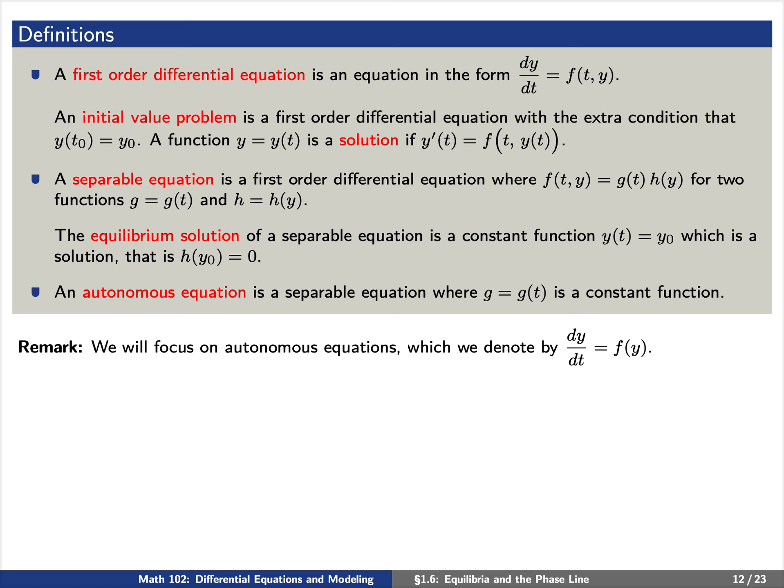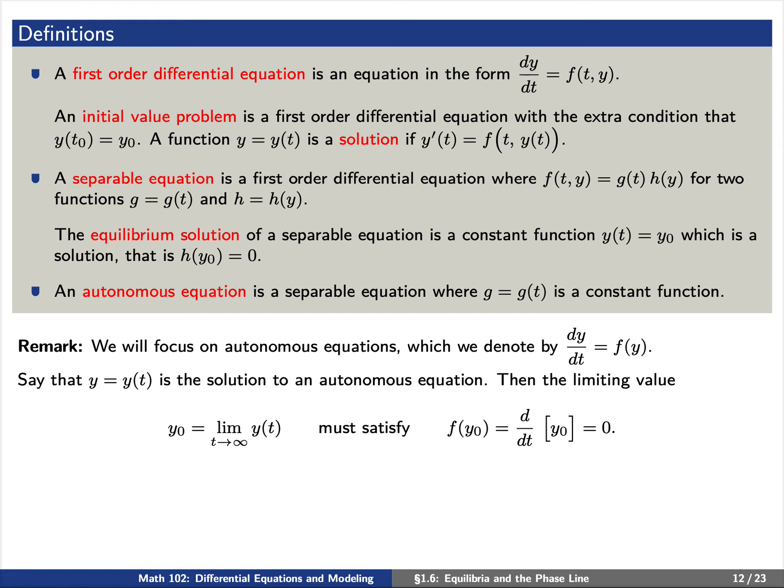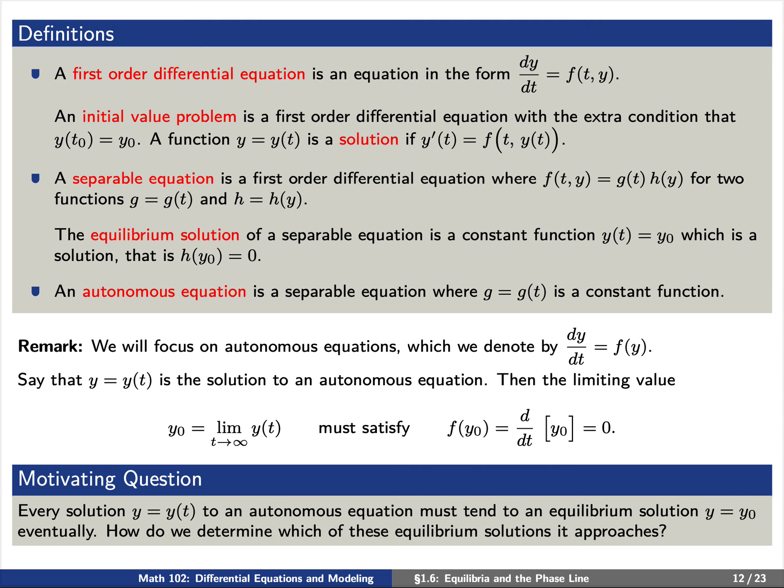Today we're only going to focus on autonomous equations, so we'll simply denote this by dy/dt equals f of y, suppressing the dependence on time t. If y(t) is a solution to an autonomous equation, then the limiting value y₀ — the value of y(t) as t increases without bound — must be an equilibrium solution; that is, f(y₀) equals 0. In other words, every solution to an autonomous equation must tend to some equilibrium solution y₀. But how do we determine which equilibrium solution it approaches? This is what we'll discuss today.